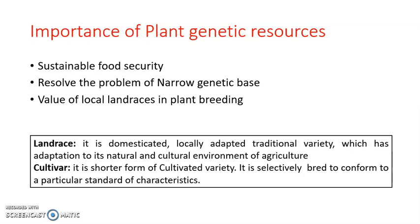Plant genetic resources also help resolve the problem of narrow genetic base. Narrow genetic base means that when plants don't have much variability — for example, if a plant variety is descended from one seed, there won't be enough variety in that population. If there is self-crossing or back-crossing, the genetic variations are reduced, creating a narrow genetic base. When genetic variation is reduced, the adaptability to the environment is compromised, and the existence of that plant population is at risk.